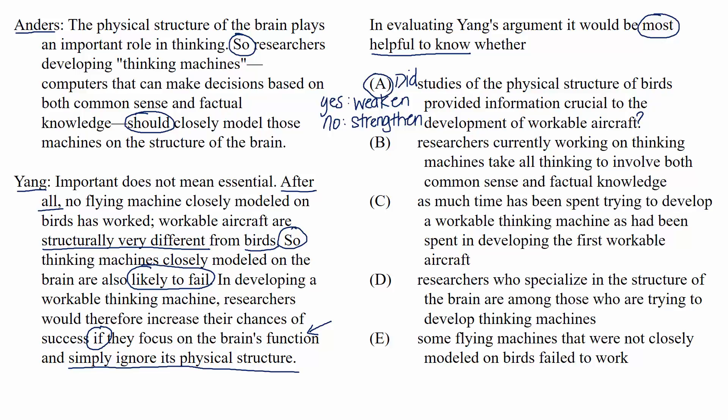B: researchers currently working on thinking machines take all thinking to involve both common sense and factual knowledge. As a question: do researchers currently working on thinking machines take all thinking to involve both common sense and factual knowledge? The answer to this wouldn't affect Yang's argument at all. It's just defining what thinking is, and it seems to be in line with what Anders defines thinking as anyway, so the answer doesn't help us evaluate the argument.